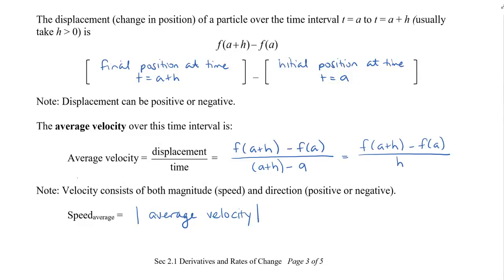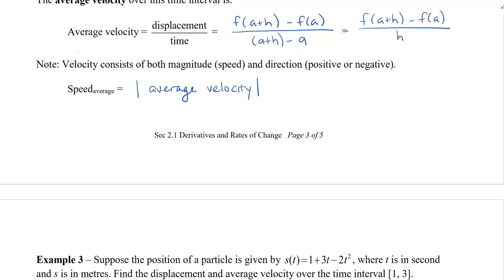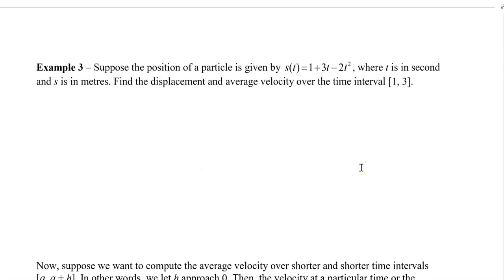Let's take a look at an example. Suppose that the position of a particle is given by S of T equal to 1 plus 3T minus 2T squared, where T is in seconds and S is in meters. Find the displacement and the average velocity over the time interval from 1 to 3.